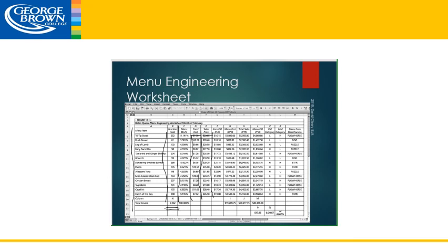You can also assign a total menu cost — so basically from selling 252 tri-tip steaks, how much cost did we incur from that. What we do is take the number sold, 252, and multiply it by the food cost for that item to get the menu cost. Then we identify the total amount of sales each menu item generated by taking the sales price and multiplying it by the number sold.